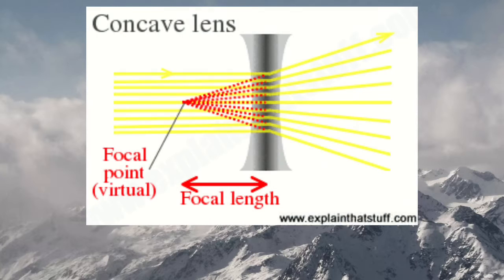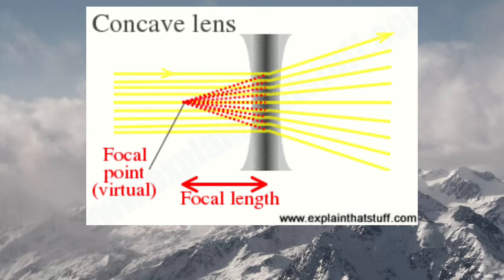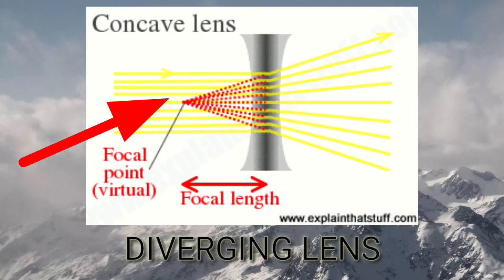Second are the concave lenses. A concave lens is a lens that possesses at least one surface that curves inwards. It is a diverging lens, meaning that it spreads out light rays that have been refracted through it. A concave lens is thinner at its center than at its edges, and is used to correct short-sightedness.